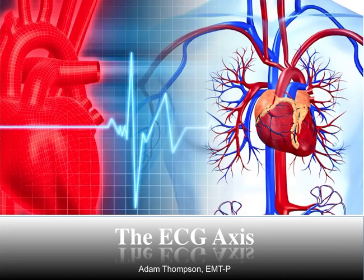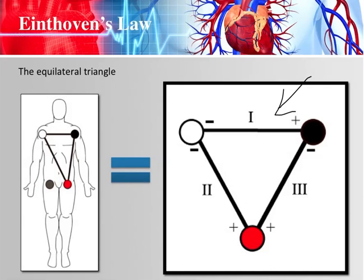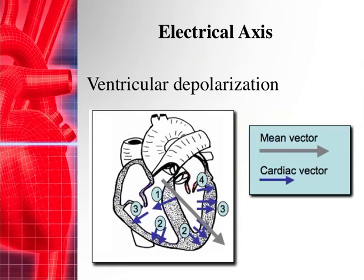Welcome back — this is Part 2 of the ECG axis tutorial. In Part 1 we talked about Eindhoven's triangle, and now in Part 2 we're going to talk about ventricular depolarization and where we actually get our electrical axis from — the QRS axis, or the mean vector.